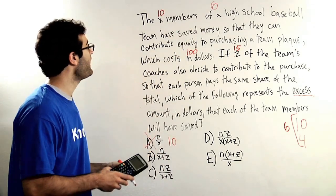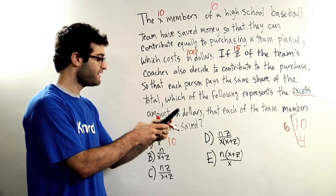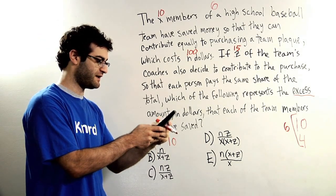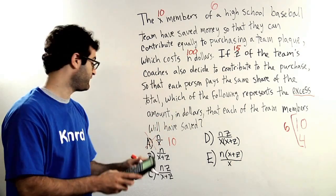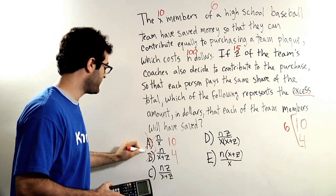Answer choice B, n over x plus z, that's going to be 100 over parentheses 10 plus 15, end parentheses. Well, it's 100 over 25, so that's 4. 4 is not my goal number, goodbye answer choice B.